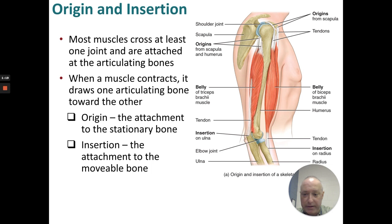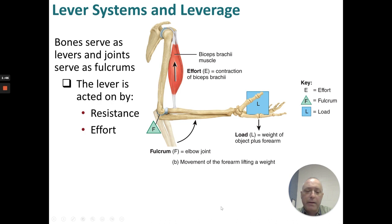The origin is the stationary bone and the insertion is the movable bone. For example, the triceps brachii — the origin is both the scapula and the humerus, and it inserts in the ulna — whereas the biceps brachii originates in the scapula and inserts on the radius. The muscles act as levers on these bones, with resistance and effort. What's important to learn about levers is the fulcrum, the effort, and the load.